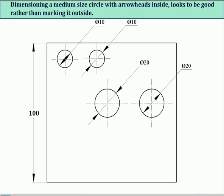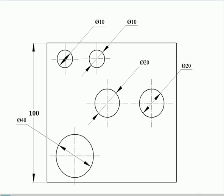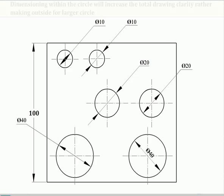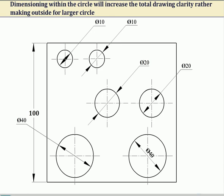Dimensioning a medium size circle with arrowheads inside looks to be good rather than marking it outside. Dimensioning within the circle will increase the total drawing clarity, rather than making it outside for larger circles.